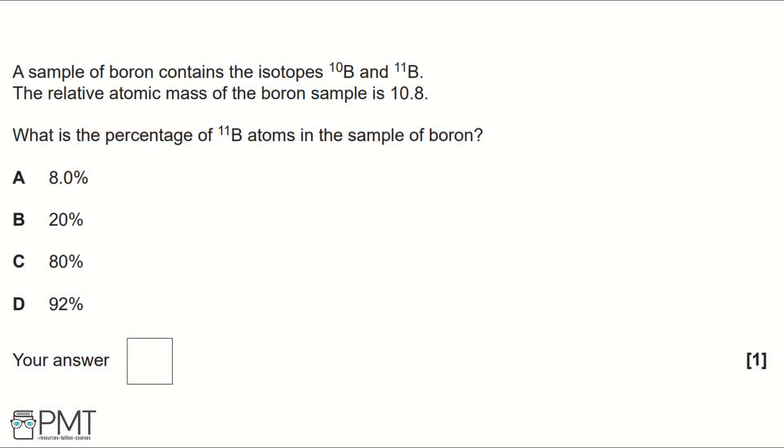A sample of boron contains the isotopes 10B and 11B. The relative atomic mass of the boron sample is 10.8. What is the percentage of 11B atoms in the sample of boron?